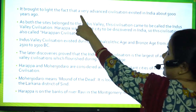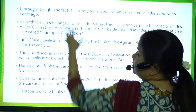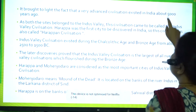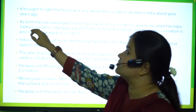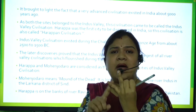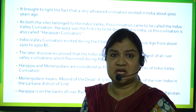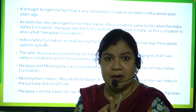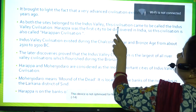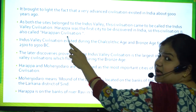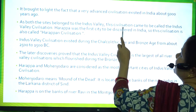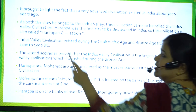These discoveries brought to light the fact that a very advanced civilization existed in India about 5000 years ago. Both sites — Harappa and Mohenjo-daro — belong to the Indus Valley, which is why this civilization came to be called the Indus Valley Civilization.